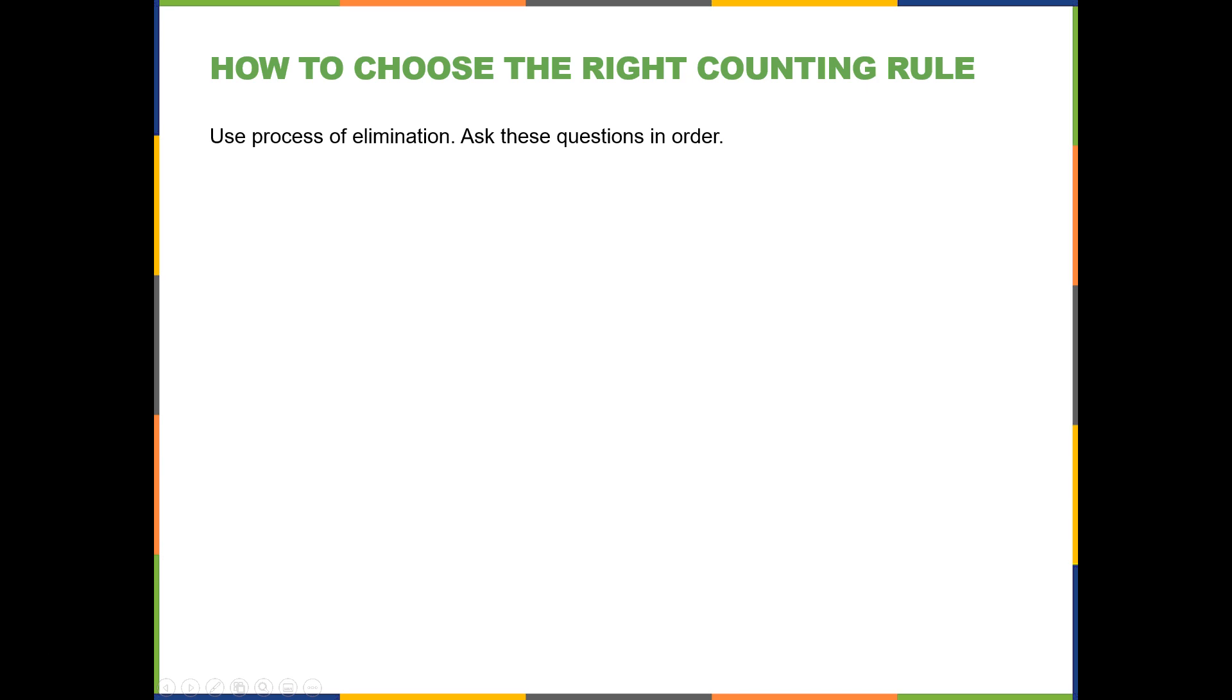Hi there, this is Professor MacDonald, and in this video I'm going to talk to you about how to choose the right counting rule when you're trying to figure out probabilities or just how many ways there is to achieve a certain favorable outcome. So I recommend using the process of elimination, and to do that you will ask these questions in order.